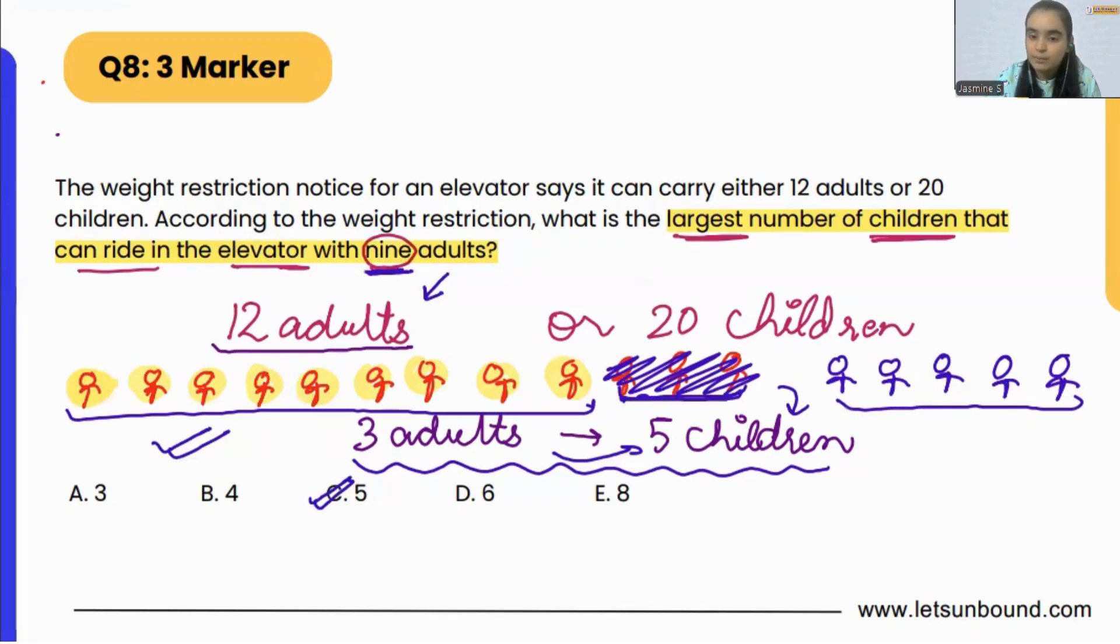We know it can either hold 12 adults or 20 children. For all 12 adults, 20 children can be there, right? So in an elevator, either there can be 12 adults or 20 children. Now from here, if we simplify it, for every 3 adults there can be 5 children. So from there we figured out 5 children can ride along instead of 3 adults.